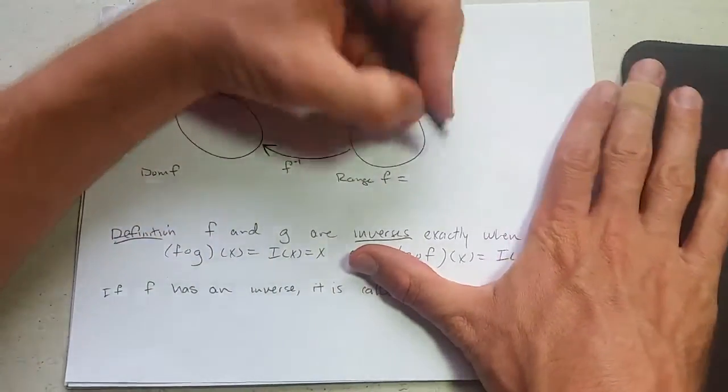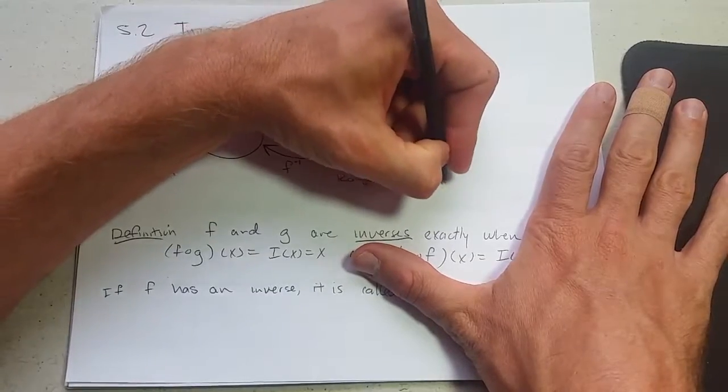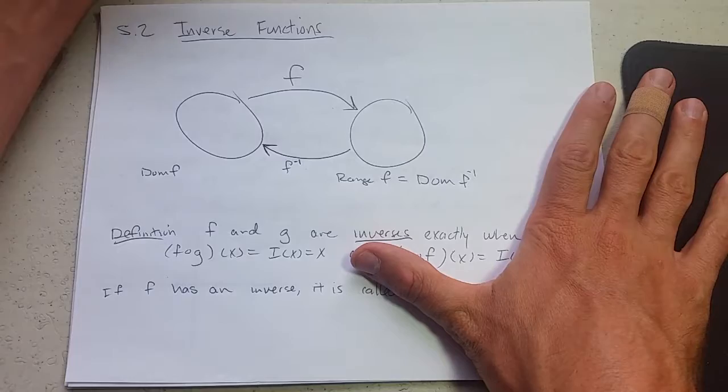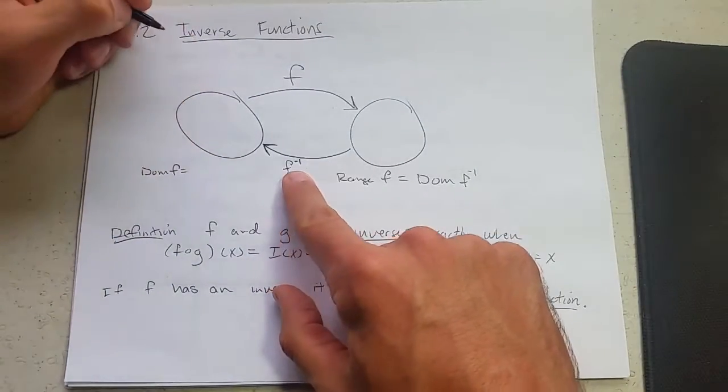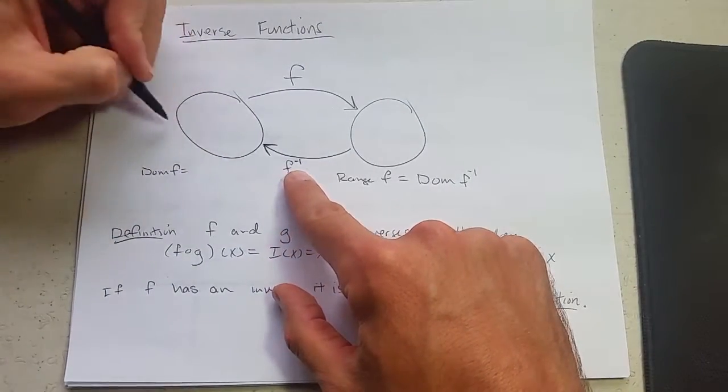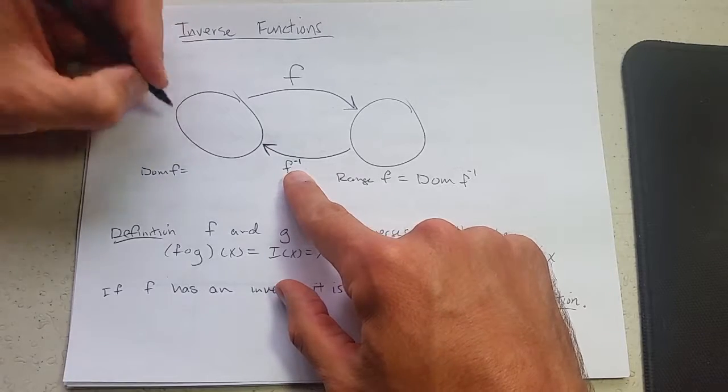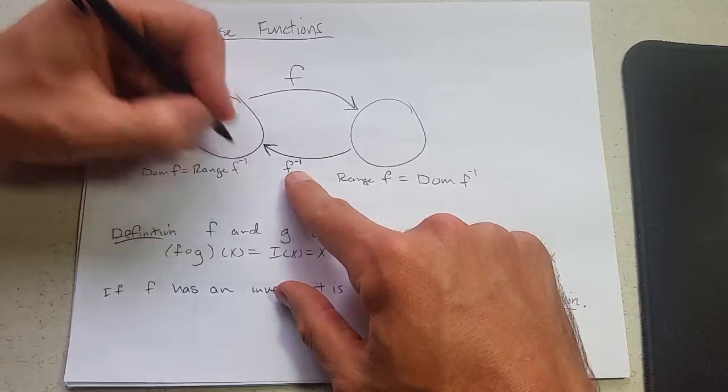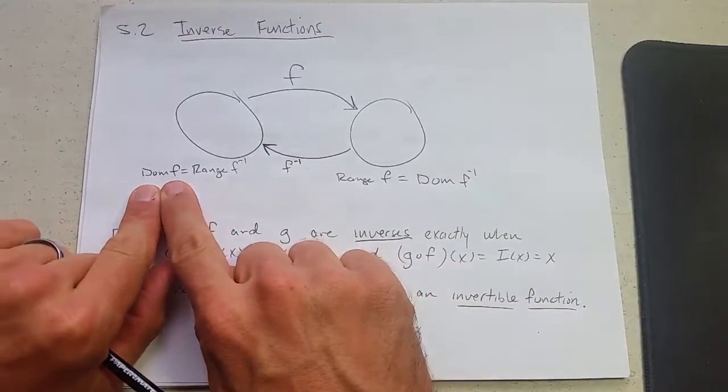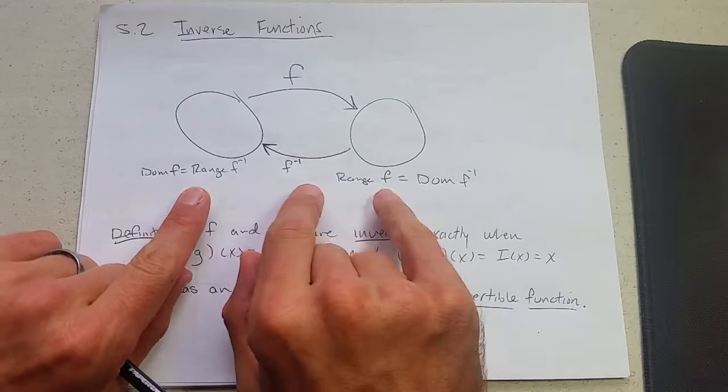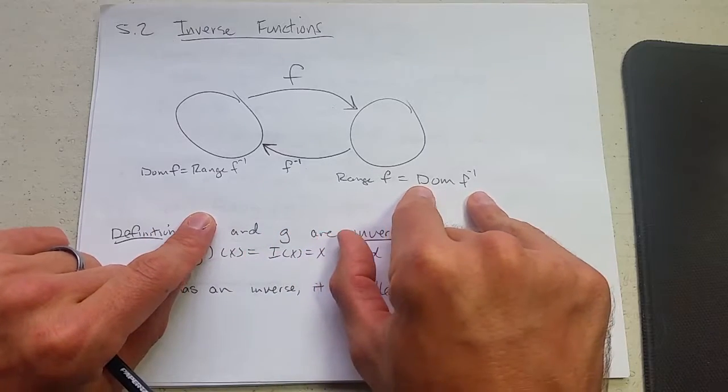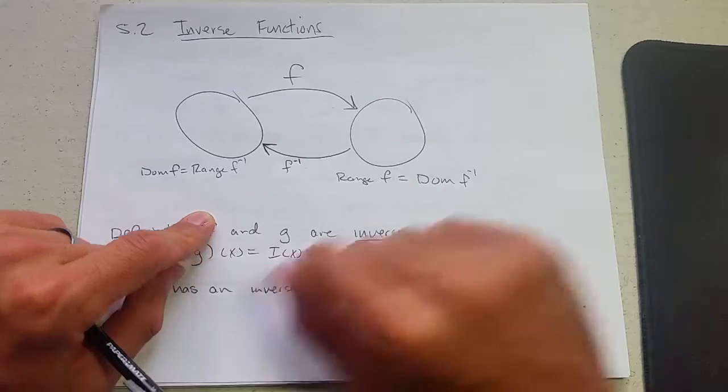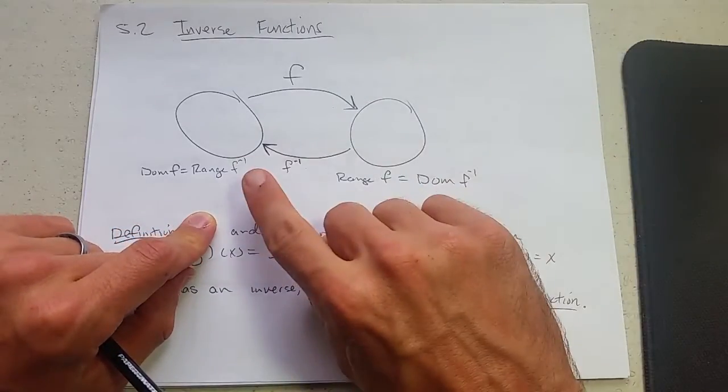So the range of f is the domain of f inverse. If you ask f inverse what is this set, f inverse will tell you that's my range. So we see the domain of f is the range of f inverse, the range of f is the domain of f inverse. They switch, they swap domains and ranges because the arrows go in the other direction.